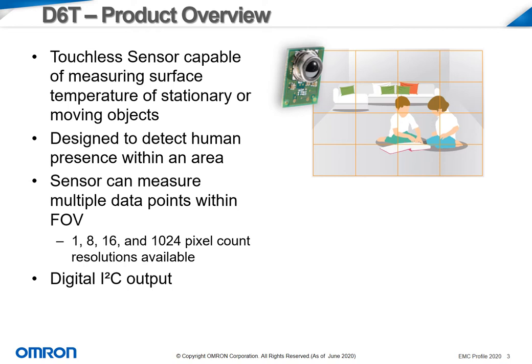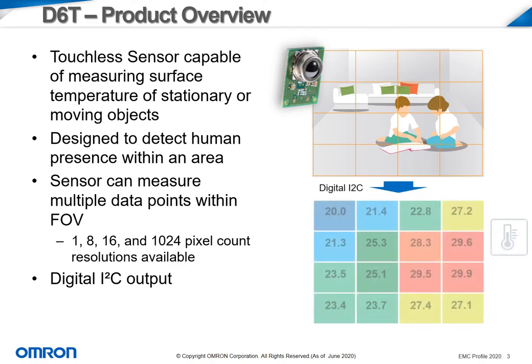Originally, this sensor was designed as a product to be used for general human occupancy in living or workspaces. In the illustration in the top right, we see a living room scene with two children reading in the corner. The sensor collects raw data from each pixel and outputs the information into a grid. The higher temperature outputs caused by the warmer temperatures of the people in the room indicate that someone is present.